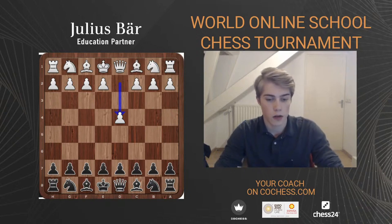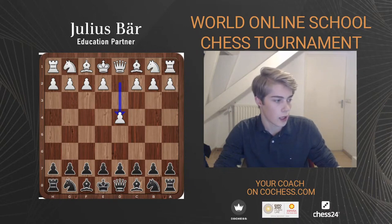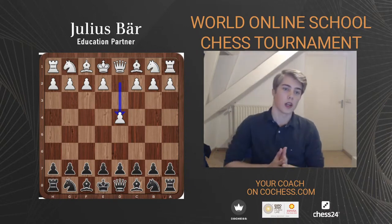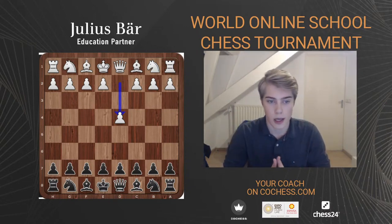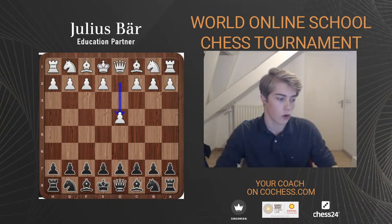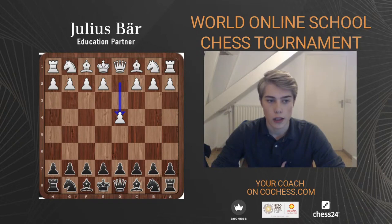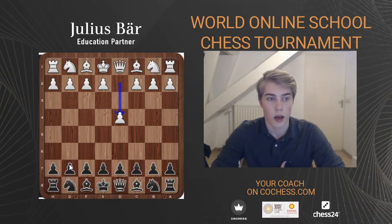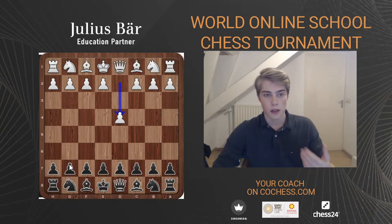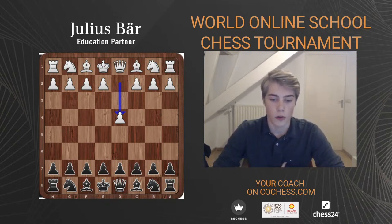I'm now online on YouTube — welcome everyone. Today we are going to be doing a co-chess session on the Queen's Gambit, which is a very interesting opening. It also features a very interesting structure: the main structure you're going to get if you play the Queen's Gambit Declined is the Carlsbad structure.